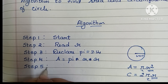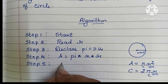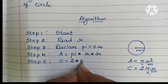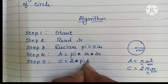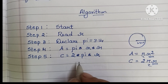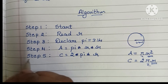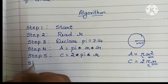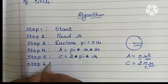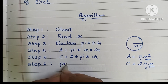In Step 5, we have to find the circumference of the circle. That is C is equal to 2 into pi into r. This is the formula to find the area and circumference of a circle.